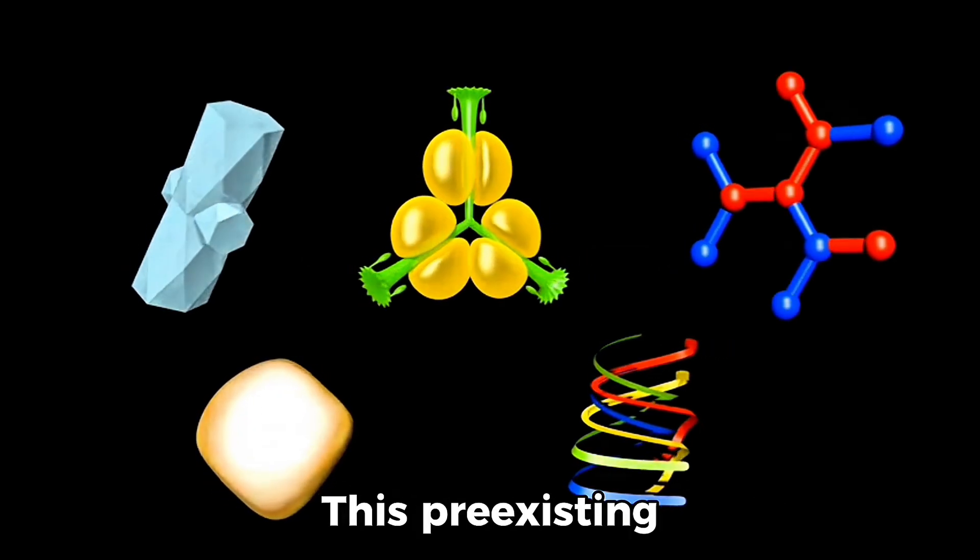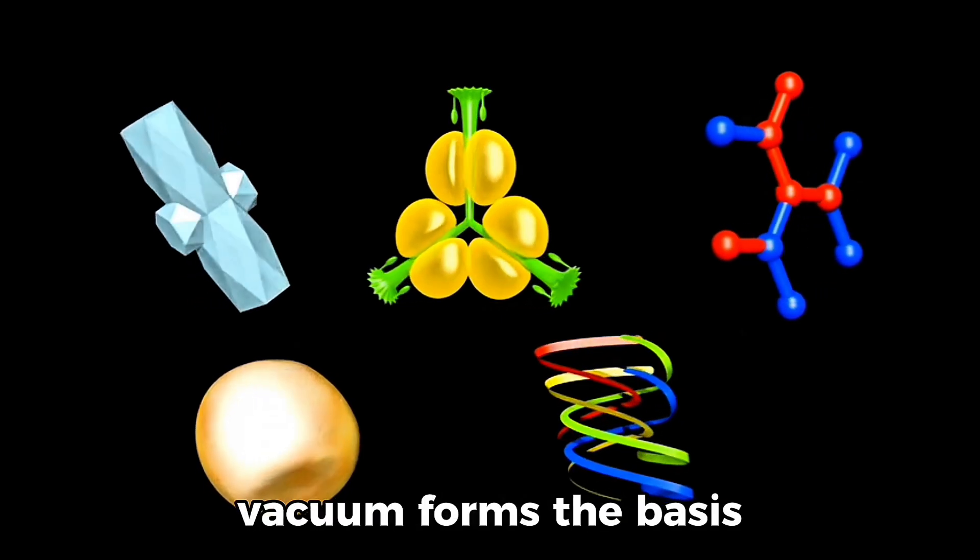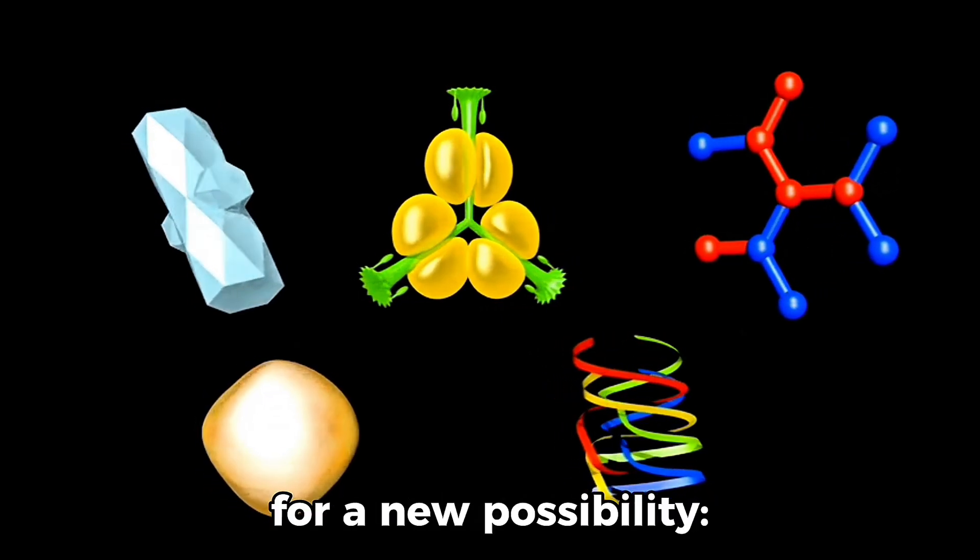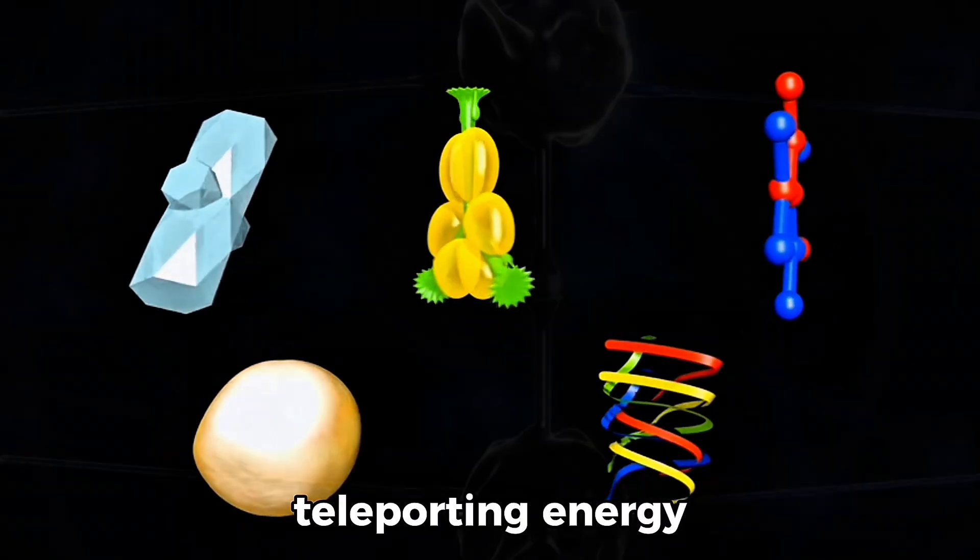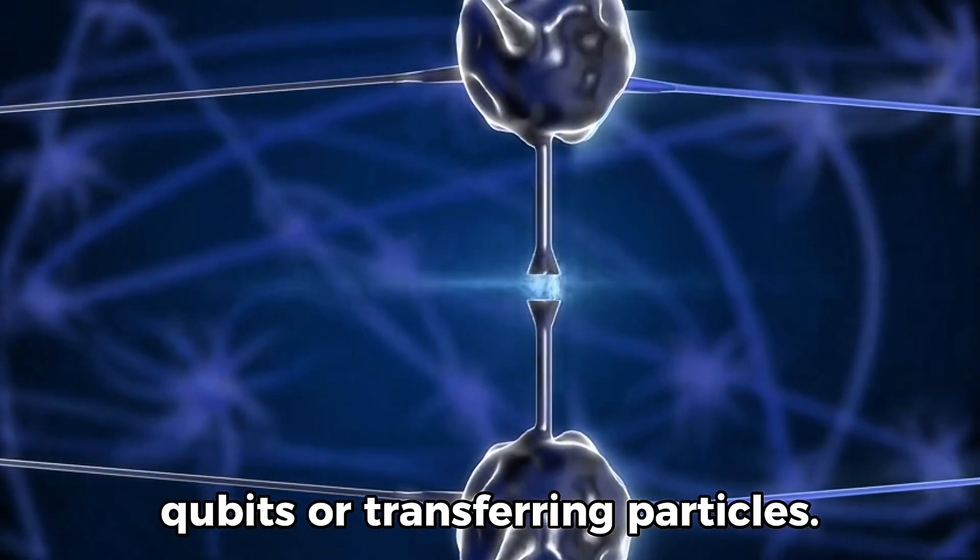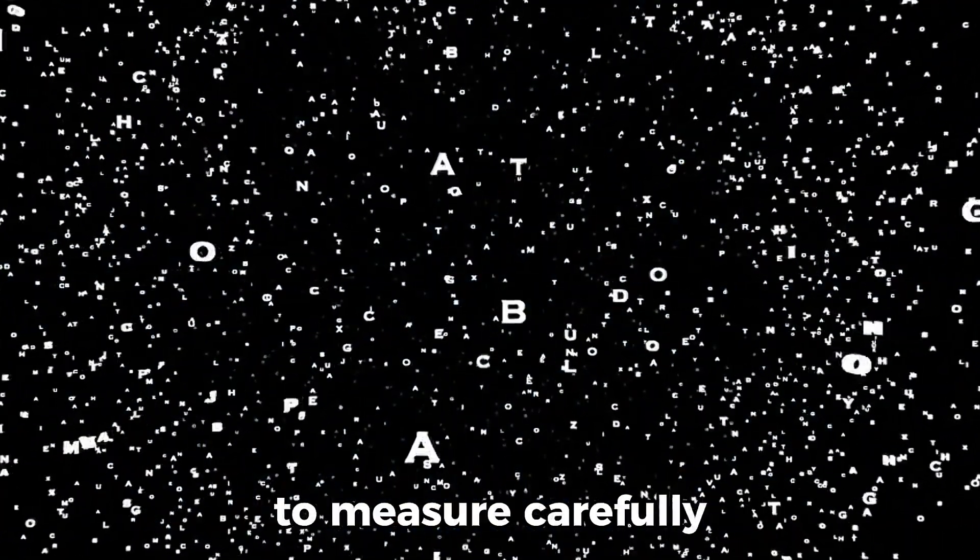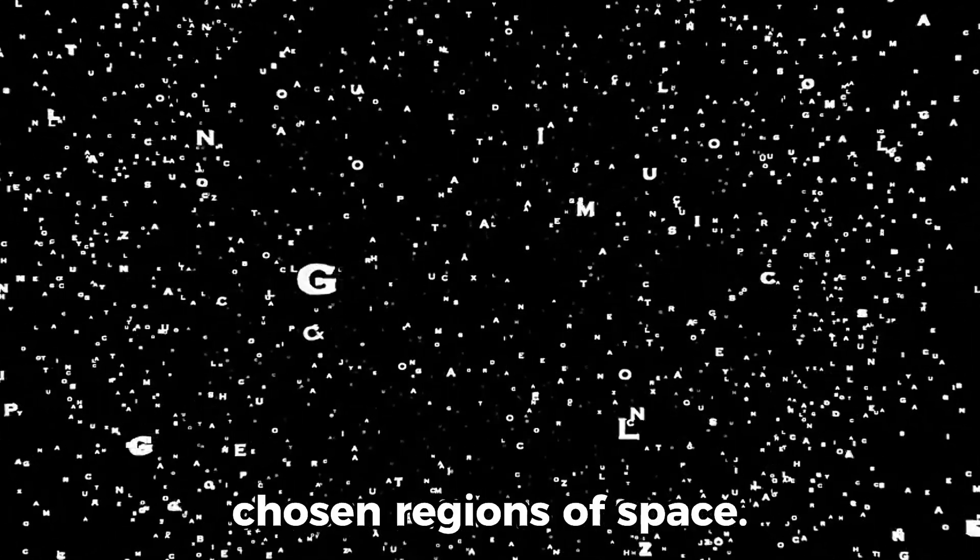This means that the vacuum at one point in space is quantum entangled with the vacuum at every other point. This pre-existing entanglement in the vacuum forms the basis for a new possibility, teleporting energy without ever preparing qubits or transferring particles. All Alice and Bob need is to measure carefully chosen regions of space.